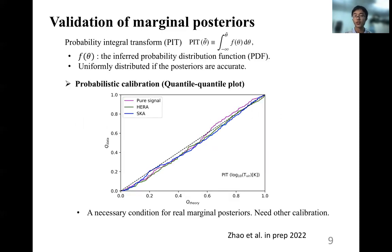We first focus on the validation of posteriors for each single parameter marginalized over other parameters. We adopt the metric of the probability integral transform, or PIT for short, which is basically the cumulative distribution function, or CDF, of the inferred marginal distribution at the true values. With the PIT values, we perform the probabilistic calibration by the so-called quantile-quantile plot, where we compare the quantiles of the PIT values shown in the y-axis with quantiles from the ideal uniform distribution in the x-axis. This quantile-quantile plot falls on the diagonal line if the PIT distribution is exactly uniform. And we find that the curves for all cases of mock observations are close to the diagonal line.